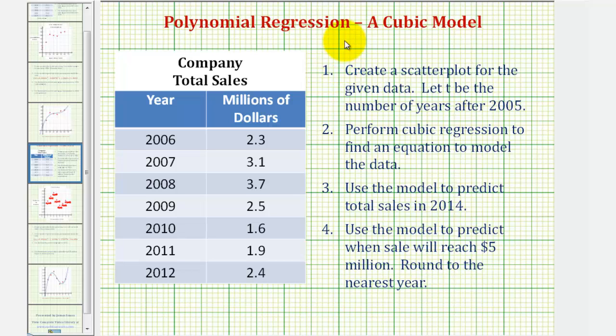Welcome to an example of cubic regression on the TI-84 graphing calculator. Here we're given data on a company's total sales where the data is paired, where we have the year and the sales in millions of dollars. We first want to create a scatterplot from the given data, where we let T be the number of years after 2005.